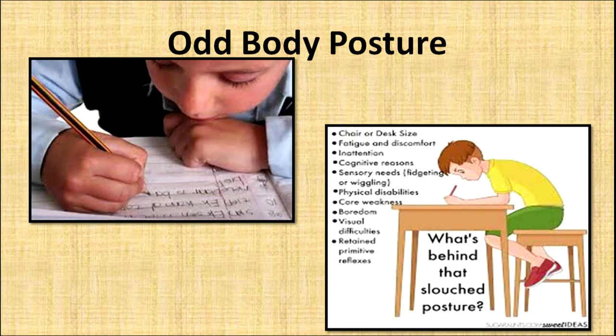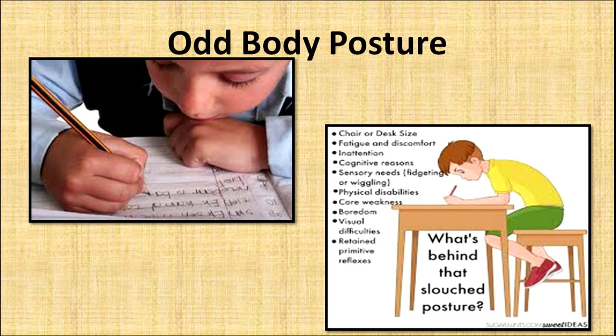The next indicator is the child's odd body posture. At times a child is leaning down on the table while writing. This is not always a concern, but if it is frequently observed, it should be noted. Another picture shows a child in a slouched posture, with the other hand resting on the legs while slouching — this is another observable indicator.